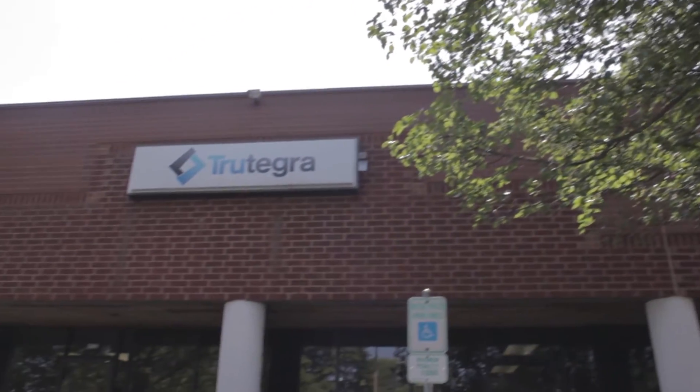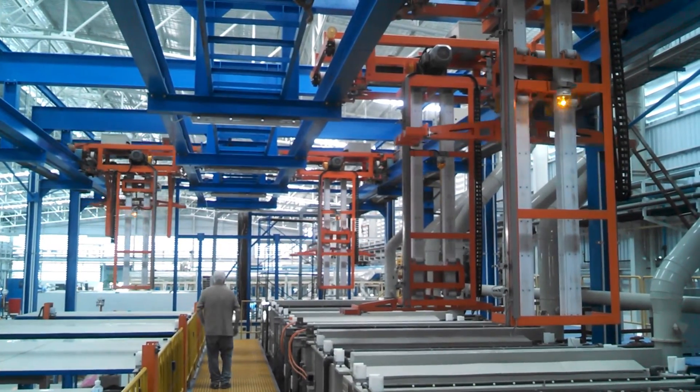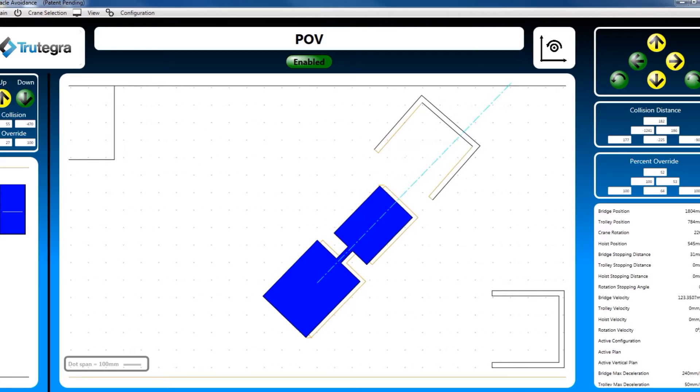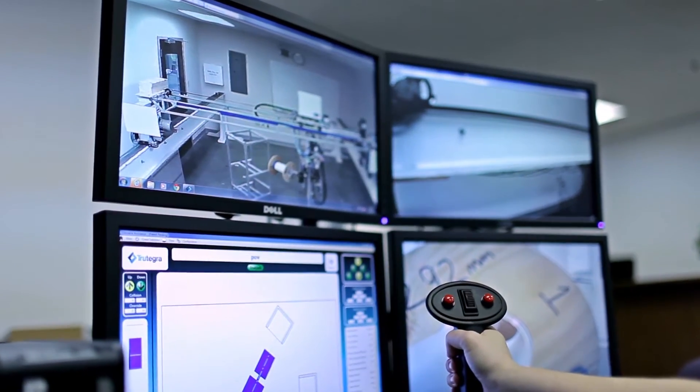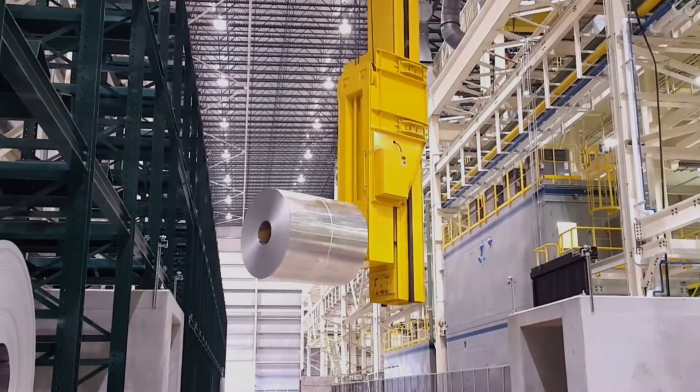Located in Charlotte, North Carolina, Trutegra helps customers improve safety and productivity with advanced technology and solutions, including no-sway, obstacle avoidance, remote operation, and multi-axis coordination for industrial cranes and other moving systems.